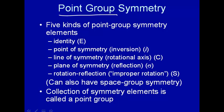Alright, so there are five kinds of point group symmetry elements. There's the identity (E), there's a point of inversion (i), a line of symmetry called a rotational axis (C), and a plane of symmetry called reflection (σ), and then there's a combination of a rotation and reflection (S).